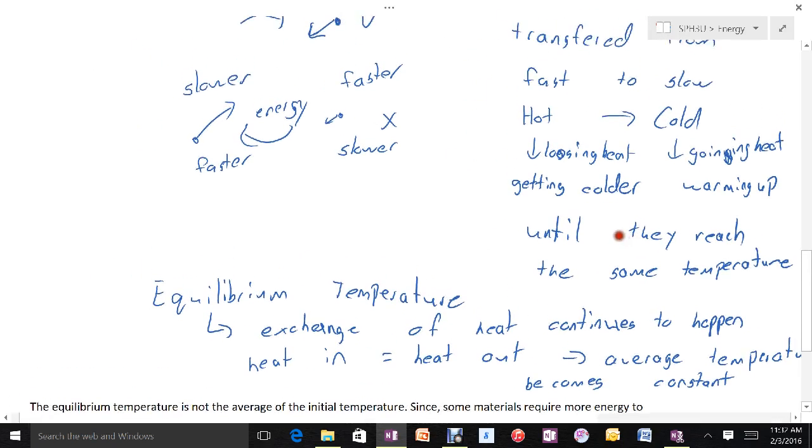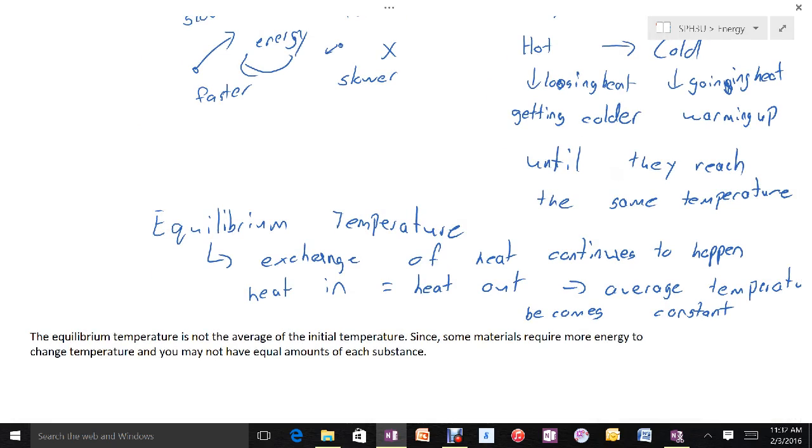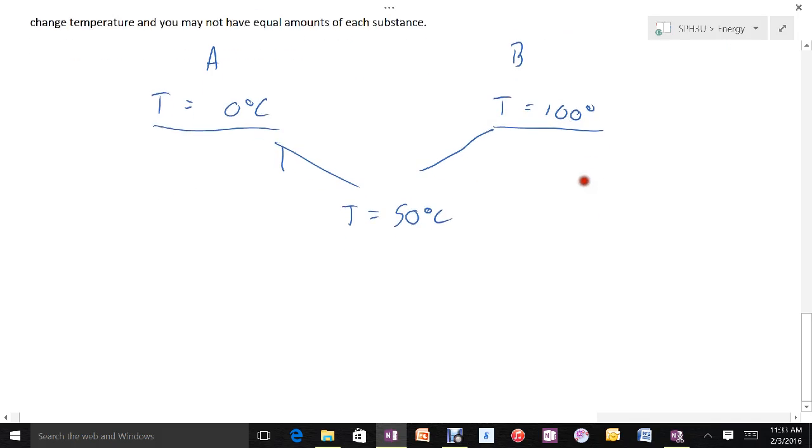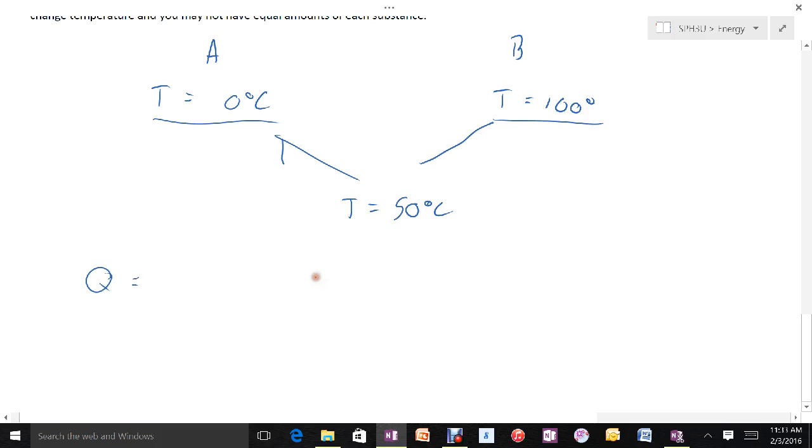We might think that if I have some substance that starts at 0 degrees C and some other substance that starts at 100 degrees C, the equilibrium temperature when these two things came together would be 50 degrees C. And that makes some sense, but that's really only taking into account the temperature. What we have to remember is that heat depends on a bunch of things. It depends on how much of the substance you have and the specific heat capacity of the substance.